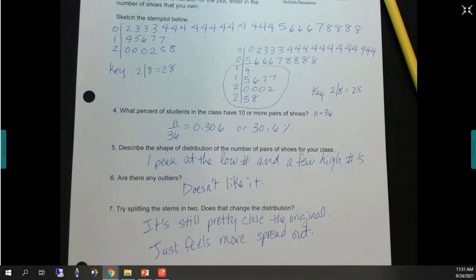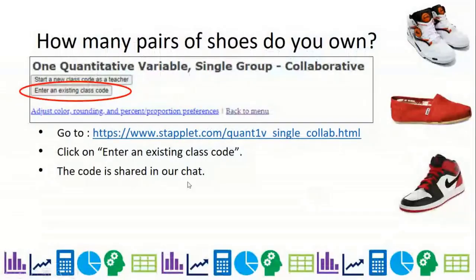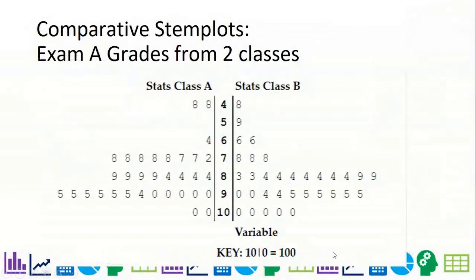I might let you put your data in there. Okay. So a comparative stem plot is, these are actually, I picked two of my three stats classes that took the test. I'm not going to tell you which is which because I'm not going to say, oh, this period is better than that period. So can you, table one, do you understand the comparative stem plot up there? Yes, ma'am.